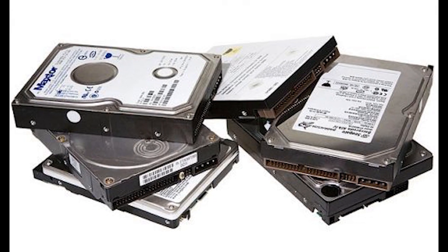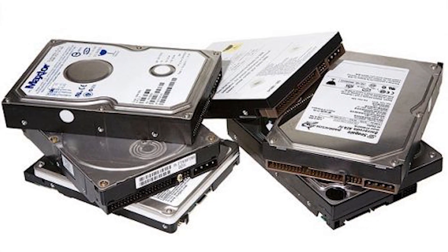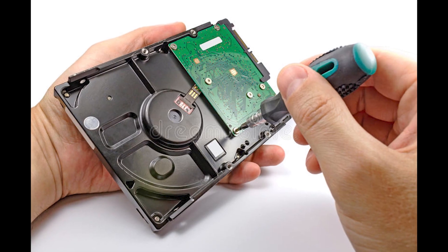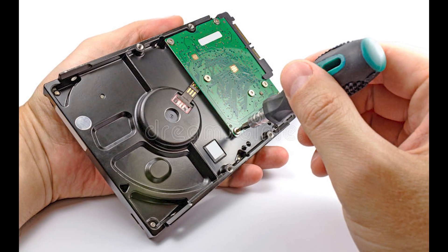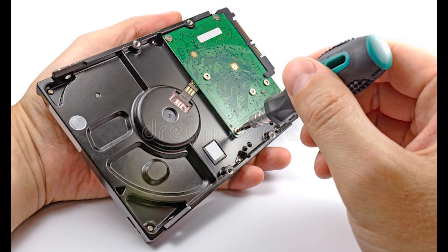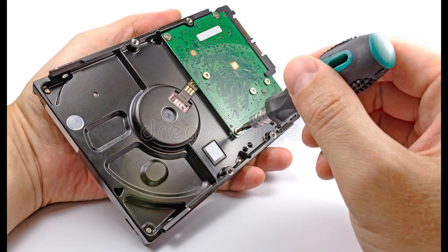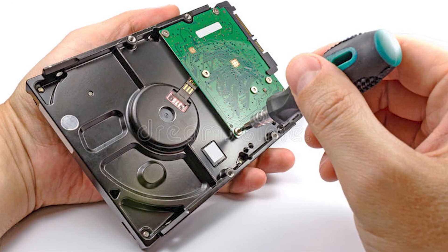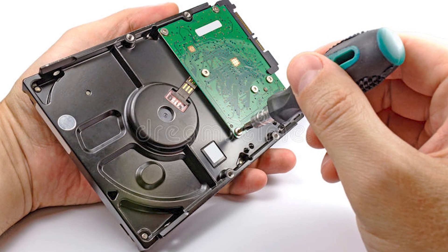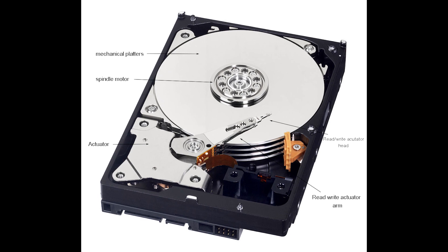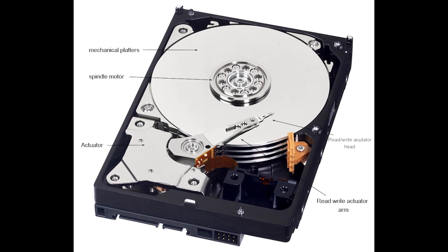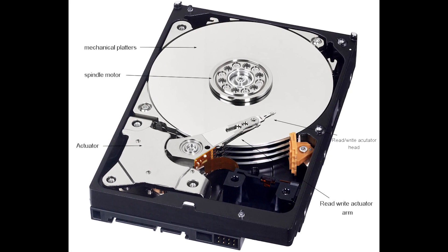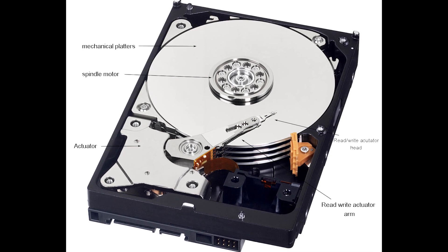Let's go back to the head disk drive. The whole mechanism of the head drive is inside the casing. On the back side of the head drive, there is a circuit board called the disk controller. The controller controls the head disk drive to cooperate with the computer. When you find data on the computer, the disk controller commands the actuator, and the actuator controls the read/write arm and head to move across the mechanical platters for accessing data.